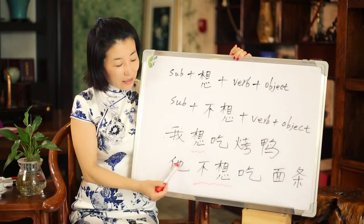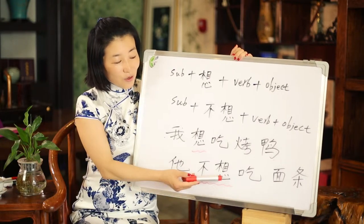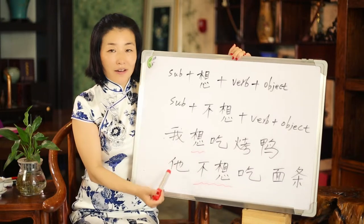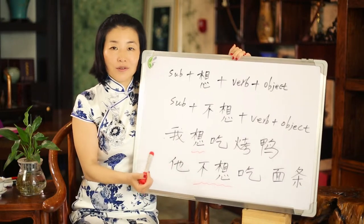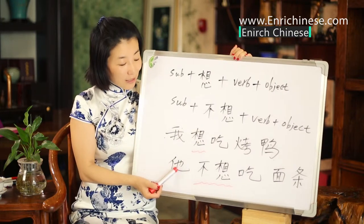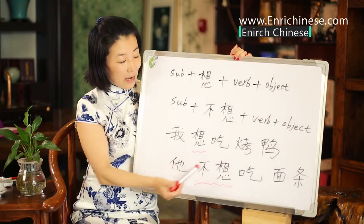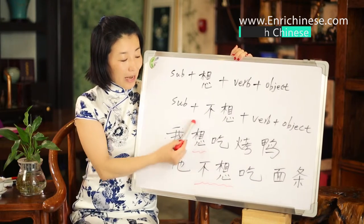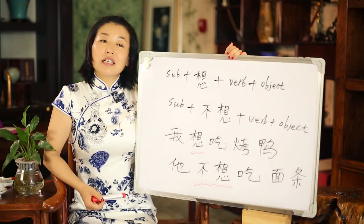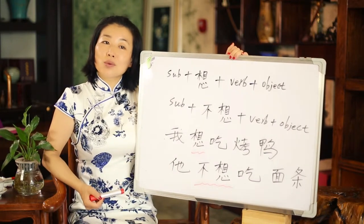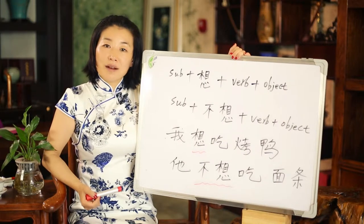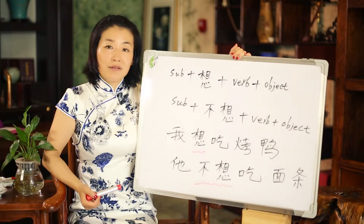他不想吃面条 — in this case, he would not like to have some noodles. He would prefer roast duck; he doesn't normally like noodles or pasta. So 他不想吃面条: 不想 is the negative form, meaning he would not like to have some noodles.